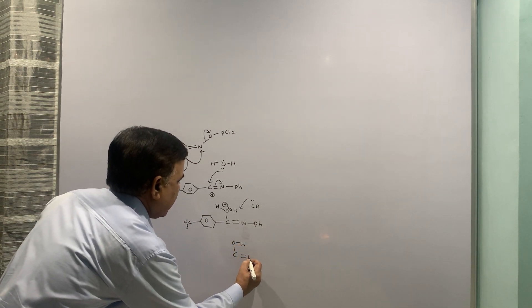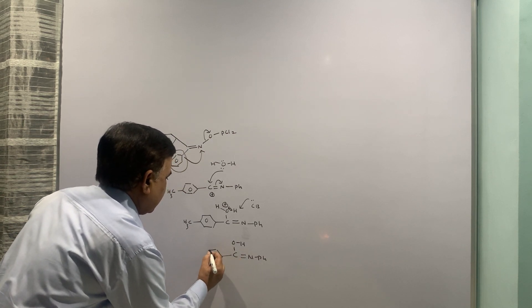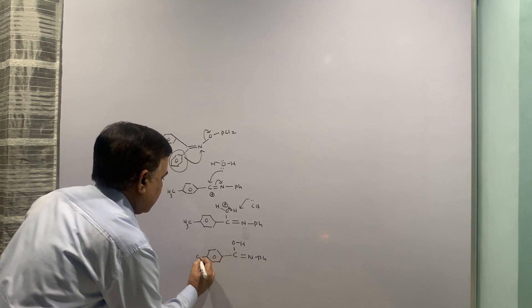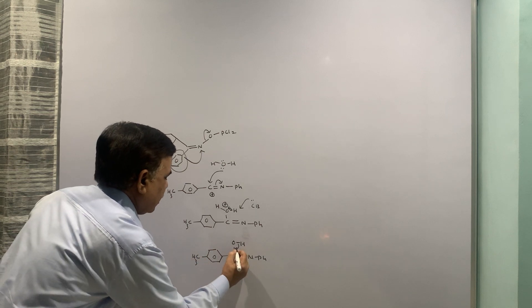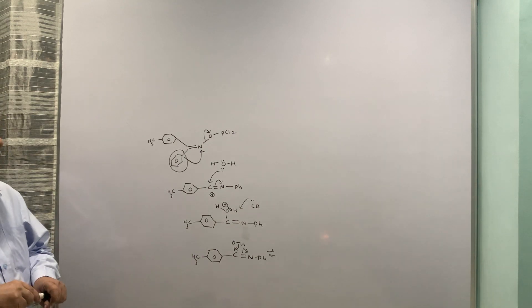And finally there is a keto-enol tautomerism. So let me put it this way. N, Ph, the other ring is intact and then this is the keto-enol. That is how you get the final compound.